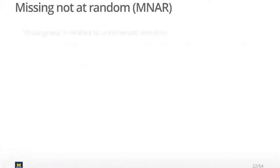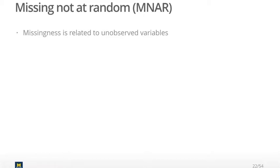Missing not at random describes a situation where the missingness is purely related to things that are not in your data set. As you can imagine, you really shouldn't be able to figure out if missingness is due to MNAR, because looking at your data it might look entirely random. But if the missingness is because of a variable you just didn't collect, there could be a reason for the missingness that you are completely missing and not aware of.